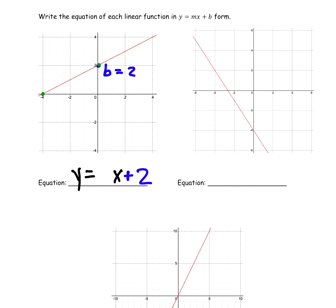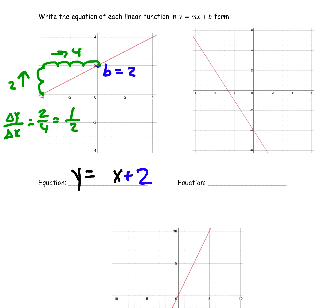Using rise over run — or y2 minus y1 over x2 minus x1 — we go up 2 and right 4, so the change in y over change in x is 2 over 4, which simplifies to 1 over 2. So my slope is 1 over 2. You could use the algebraic slope formula, and any two points on the line will always give a constant rate of change of 1 over 2.